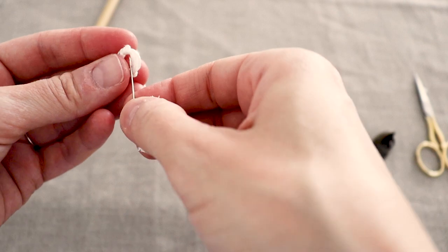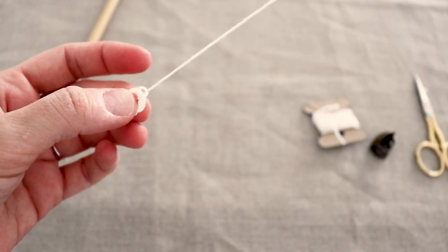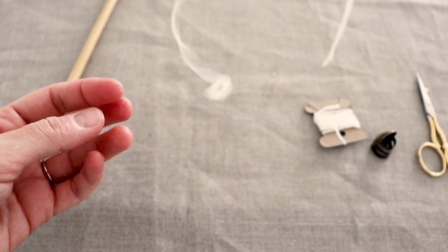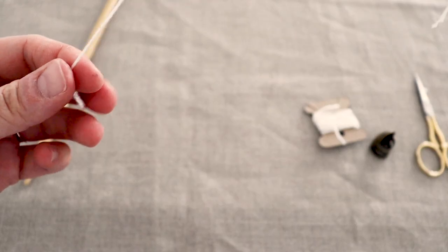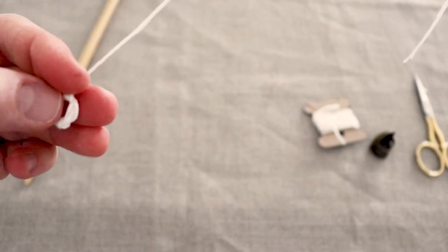If you feel like your thread is becoming kinky halfway through, release the button – those stitches aren't going anywhere – and let the thread unwind. Just make sure the button is oriented correctly when you begin stitching again.